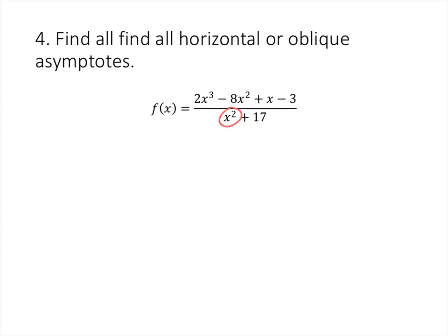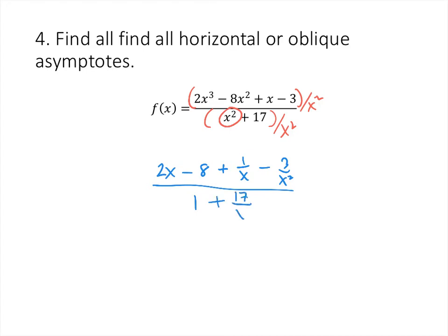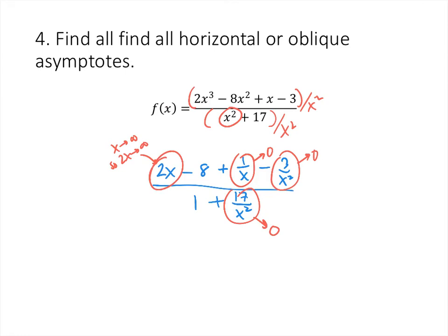Again, same process. The highest power of x on the bottom is x squared, so we divide top and bottom by x squared. But something a little different is going to happen this time. On the top we get 2x minus 8 plus 1 over x minus 3 over x squared, and on the bottom we get 1 plus 17 over x squared. As x goes to plus or minus infinity, the fractional terms go to 0, but x itself goes to infinity — so 2x goes to infinity. We can be more specific: because of this 2x, the function is going to be getting closer and closer to a line with slope 2.